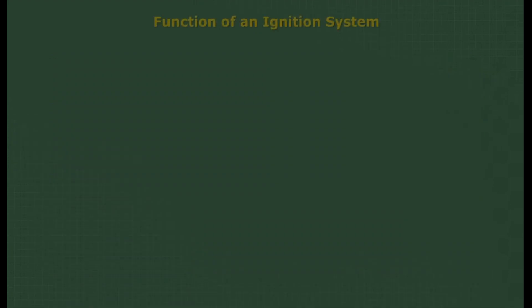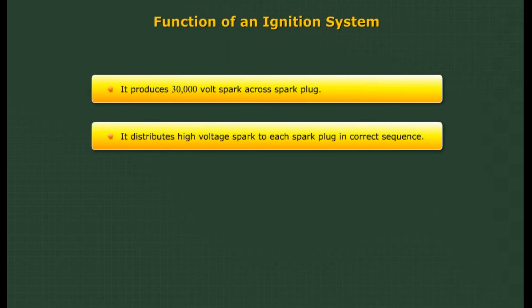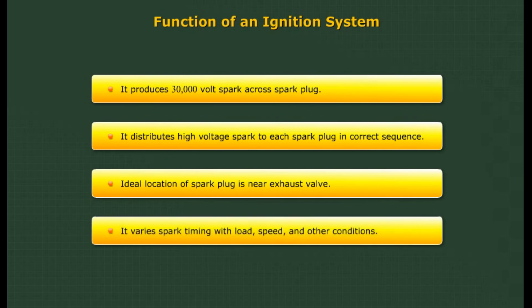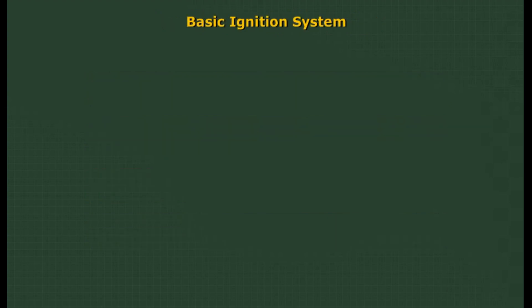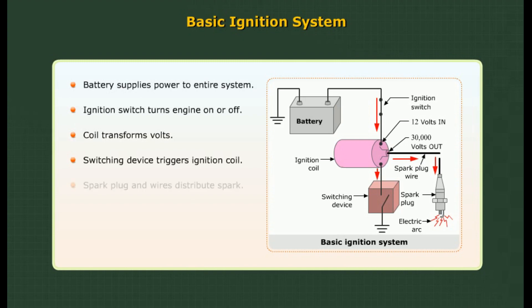Functions of an ignition system: It produces a 30,000 volt spark across the spark plug. It distributes high voltage spark to each spark plug in the correct sequence. The ideal location of the spark plug is near the exhaust valve. It varies spark timing with load, speed, and other conditions. The basic ignition system: battery supplies power, ignition switch turns engine on or off, coil transforms voltage, switching device triggers ignition coil, and spark plug and wires distribute spark.